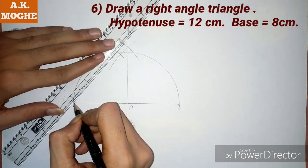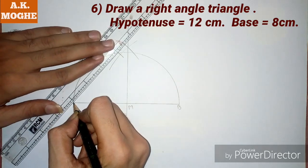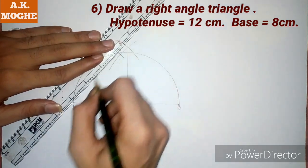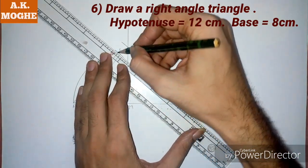Join points A, C, and B. So the right angle triangle with hypotenuse equal to 12 centimeters and base equal to 8 centimeters is ready. In this problem, the hypotenuse is given as AB and the side is given as 8 centimeters.